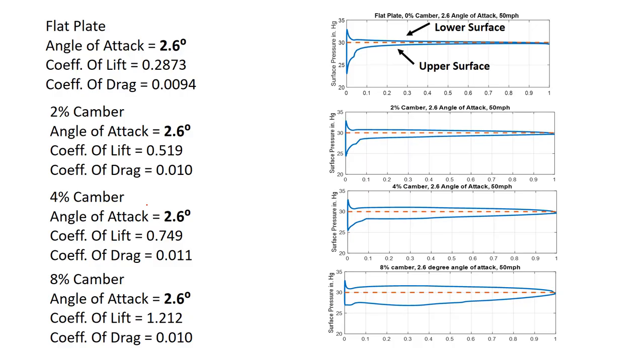Shouldn't be a surprise. At the same angle of attack, my flat plate, 0.2873. And by the time I get to my eight percent camber, that's 1.2. That's a factor of about four. The drag, not much different, not much different at all. Clear winner, that's the airfoil we want if we're just bending a flat plate.